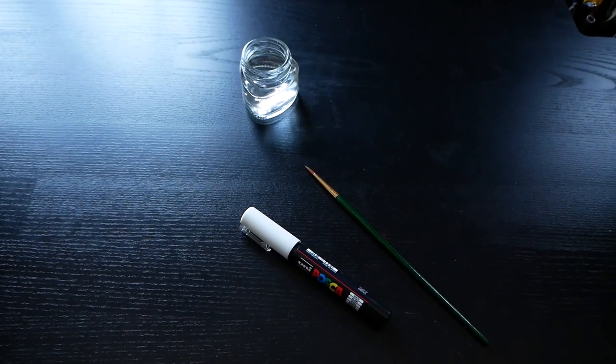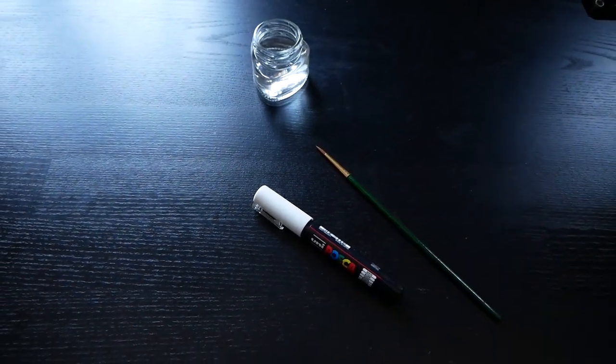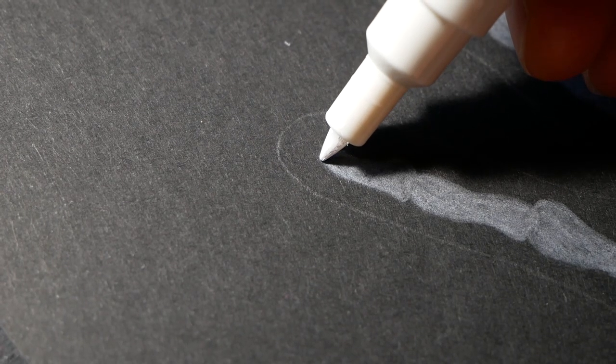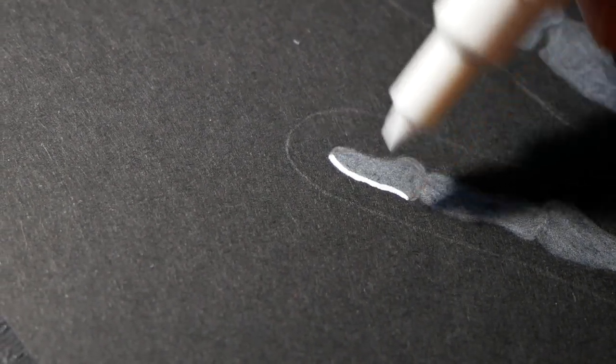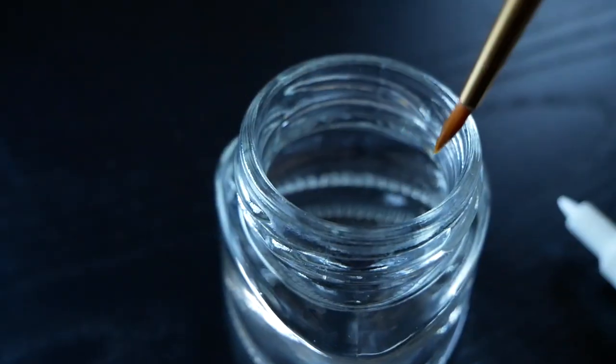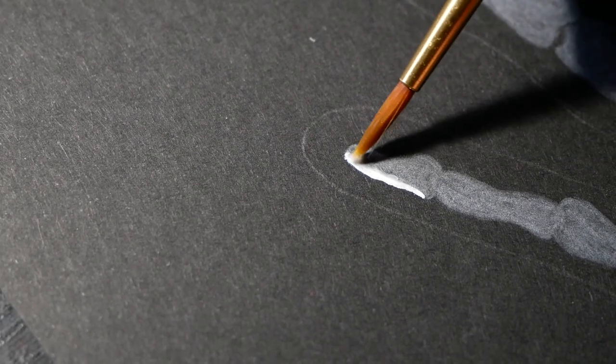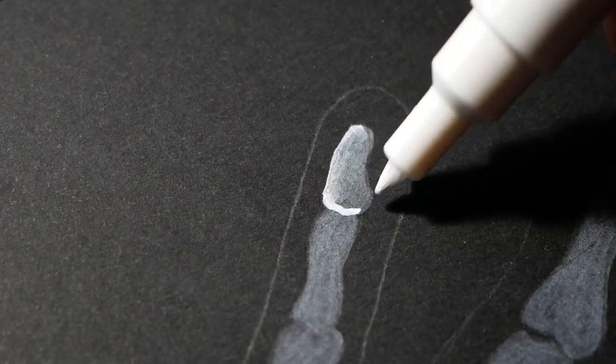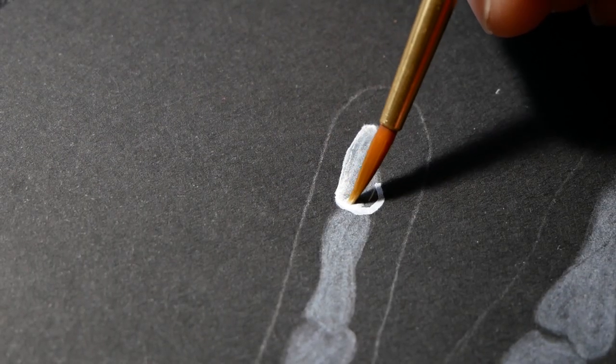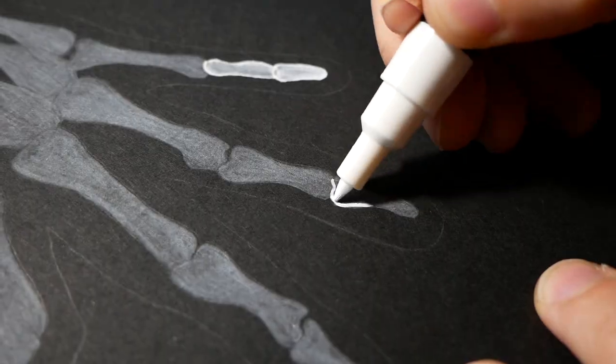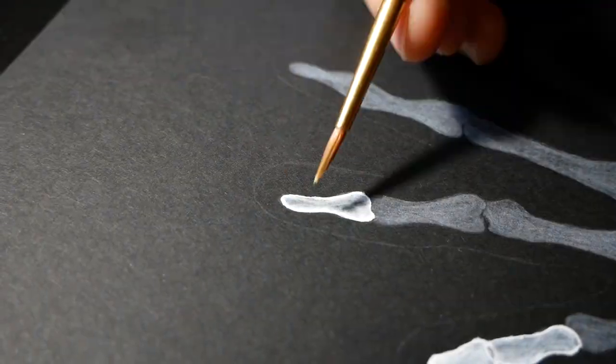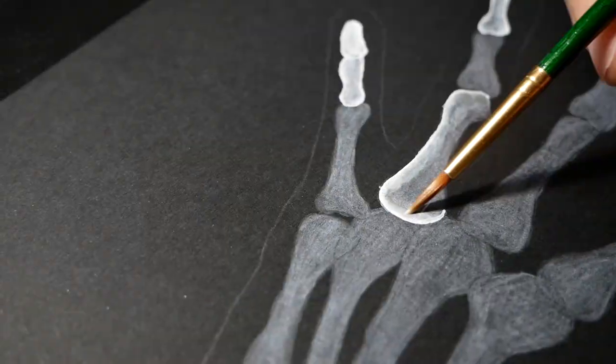So besides a little bit of water, we also need the brush and the Posca marker. First, I use the Posca marker to contour the bone. After that, I need a smooth transition from the Posca paint to the pencil. And I simply do that by gently touching the Posca paint with a wet brush. The key here in making this successful is that the Posca paint should still be wet when you use the brush to go over the paint.